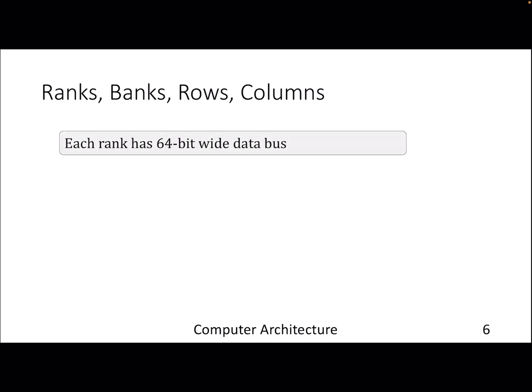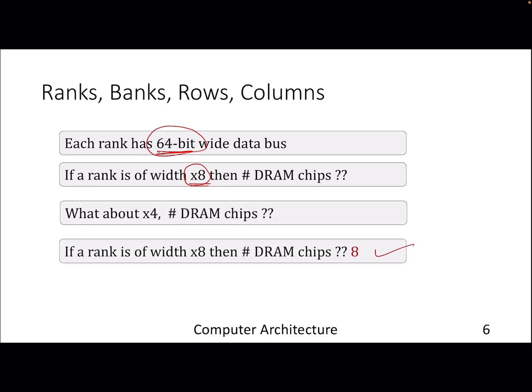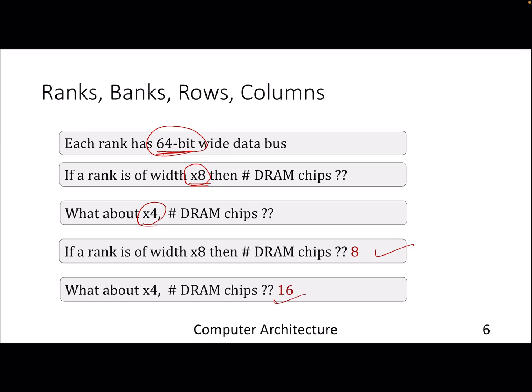Looking at the complete picture: if each rank has a 64-bit wide data bus and each chip is x8 — meaning 8 arrays — then we need 8 DRAM chips to communicate 64-bit data. Similarly, for an x4 specification, the number of DRAM chips would be 16, with 16 chips transferring 64-bit data in one go. x4 means a given chip has four arrays, each being a combination of rows and columns.